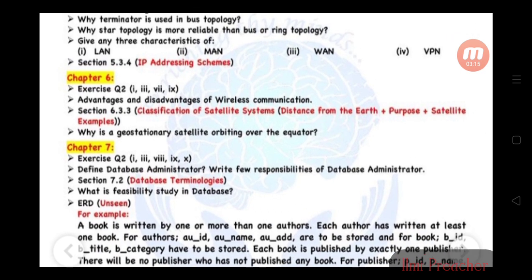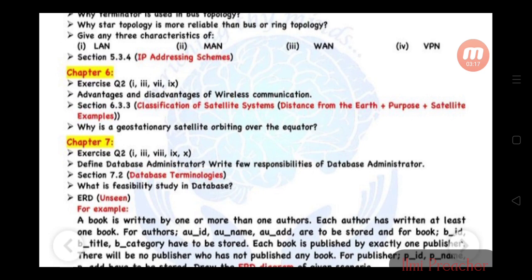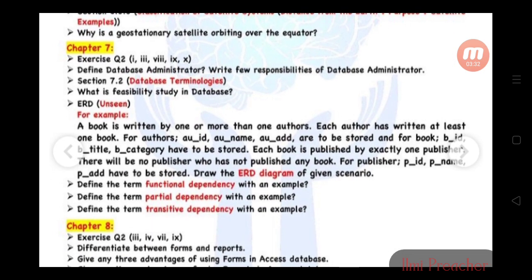Chapter 6, Exercise question 2: parts 1, 3, 7, and 9. Advantages and disadvantages of wireless communication. Section 6.3.3: Classification of satellite systems - distance from Earth, purpose, satellite example. Why is geostationary satellite orbiting over the equator?